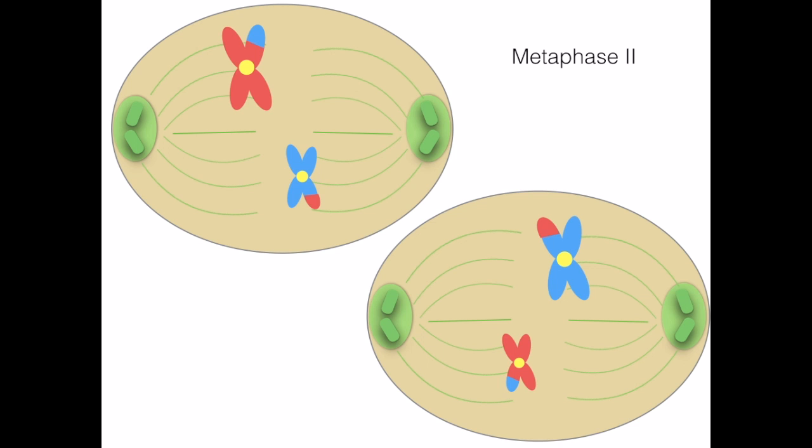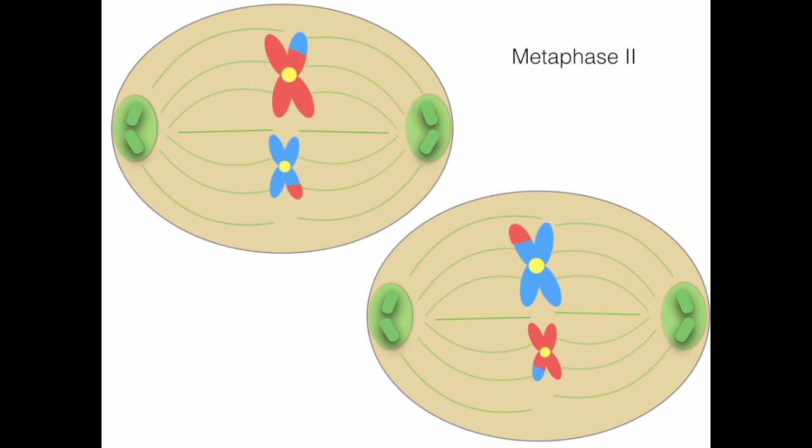In metaphase 2, the spindle fibers attach to the centromere of the chromosomes and the chromatin align in the center of the cell.